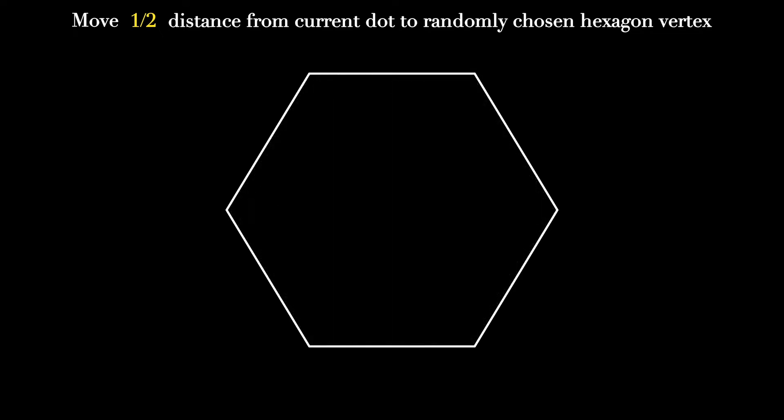But what if we do the same thing with a minor change? Start with a random dot inside the hexagon, but this time move two-thirds of the distance from the current dot to a randomly chosen hexagon vertex. What will happen if we repeat this process 30,000 times?